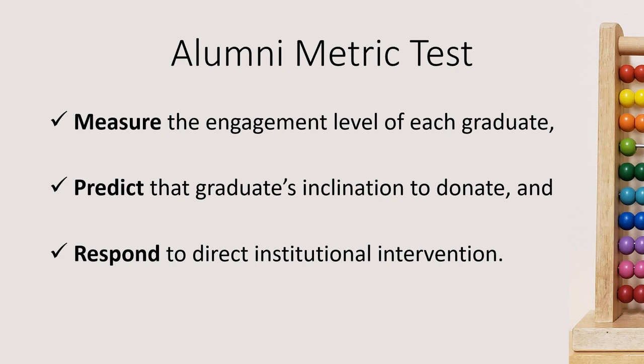In my 15 years in alumni engagement and fundraising, I started to think about metrics as needing to pass a test. And so this is my alumni metric test. In order for an alumni metric to be useful, it has to check these three boxes. It has to measure the engagement level of each graduate, it has to predict that graduate's inclination to donate, and it has to respond to direct institutional intervention. So it's got to measure, predict, and respond.